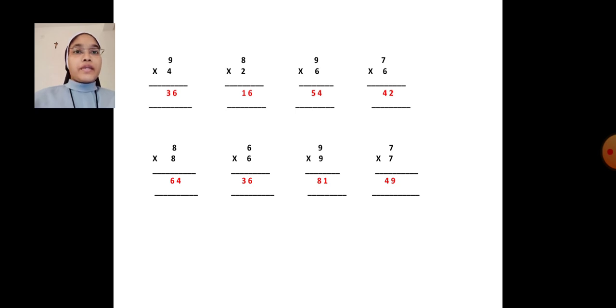9's table we have to say 9 times. 9 9's are 81. 7 into 7. 7 7's are 49.